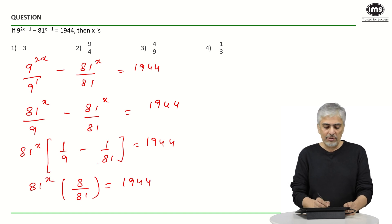81 raised to x upon 81 is 1944. Cut the 81 with 1944. 81s are 8, 2s are 16, that is 3. So 8 times 4 is 32 and 8 times 3 is 24. 243.